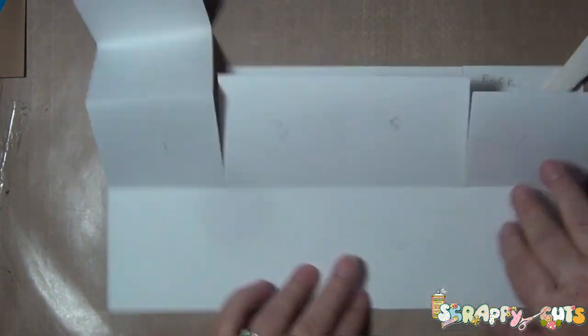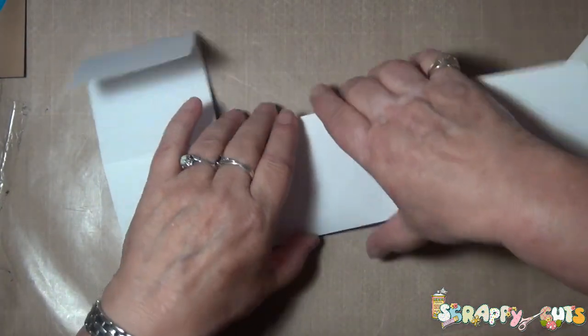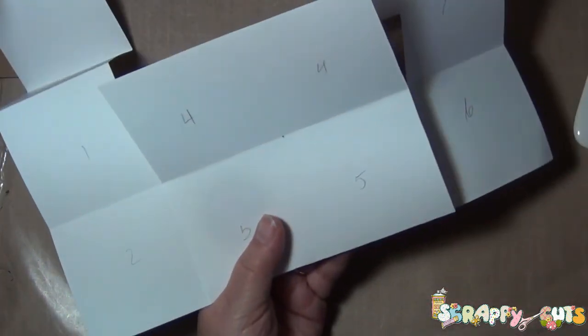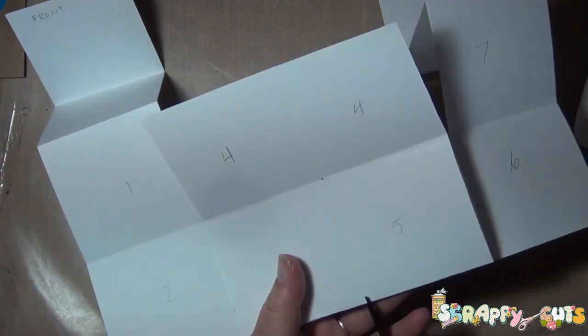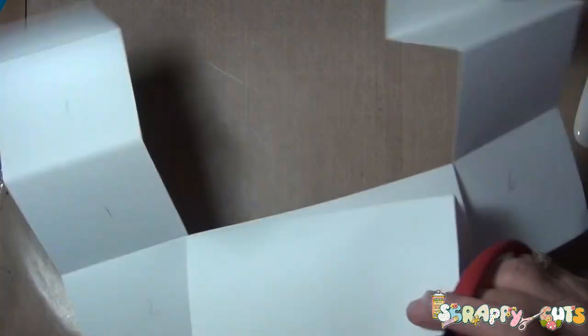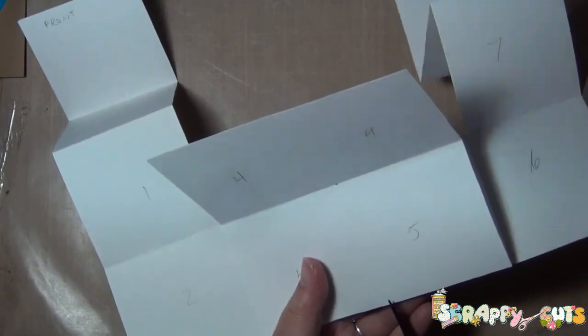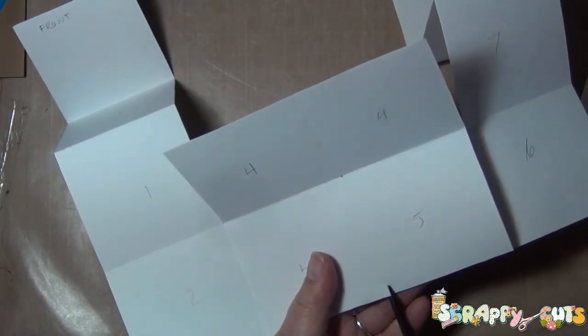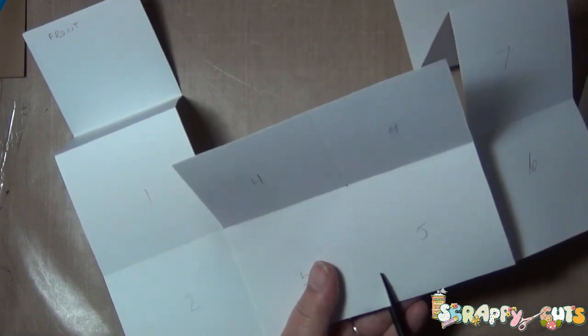And then turning it around and making the bottom to have the rows again and then the top is a flap. So cutting between the 3 and the 5 all the way up to the 4, 4, and not past the 4, 4 line.